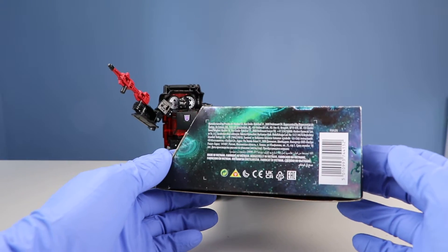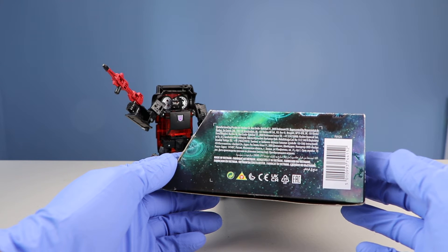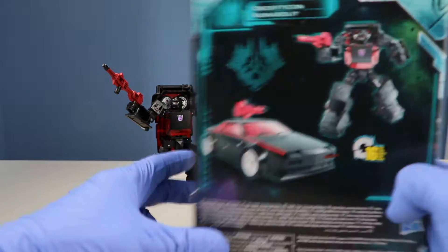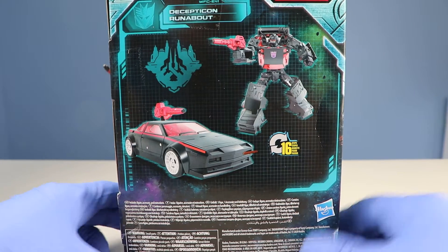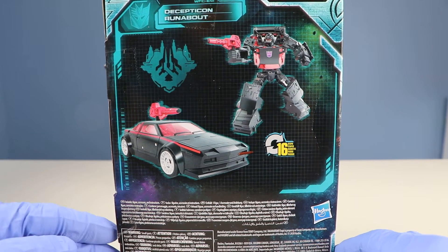And here's a shot of the UPC in case you want to look it up: 5010993744152. And on the back of the box, you can see what he looks like in car mode and bot mode. And you can see Transformers in 16 steps.